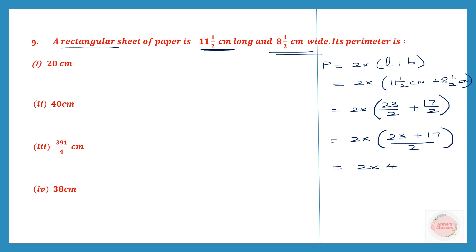We can cancel 2 into 40/2 — the 2s cancel — leaving 40. So the perimeter is 40 centimeters. Which option is it? It's option 2, and the answer is 40 centimeters.